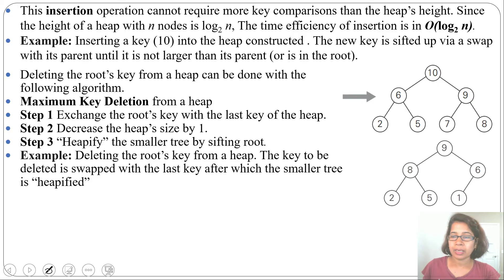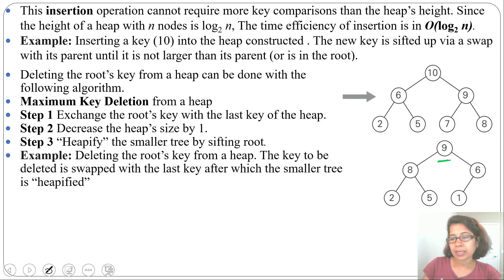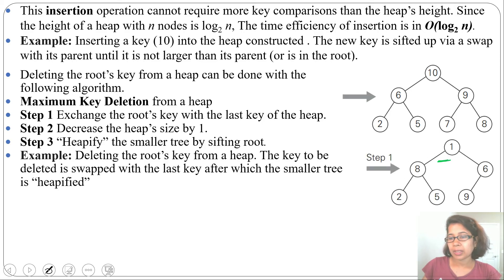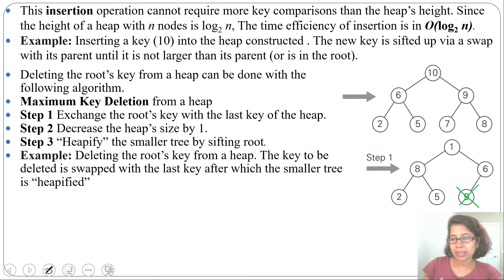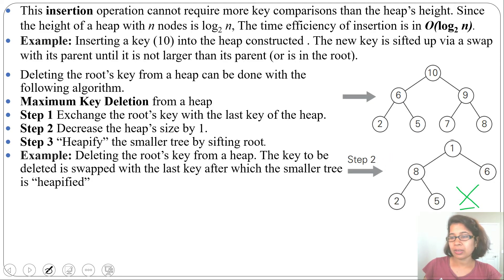This is a heap and we want to delete 9, which is the maximum. We swap 9 with 1. After the swap we get this tree. Next, we decrease the heap size to delete 9. After deletion we get this tree, but it is no longer a valid heap, so we need to heapify.